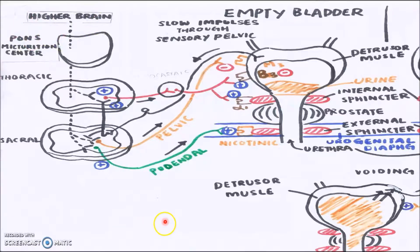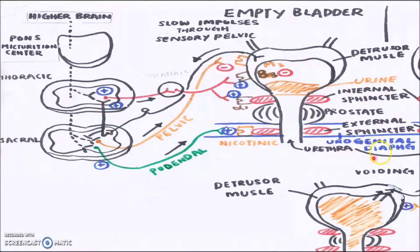As you can see, this is our CNS — central nervous system — with the higher brain and the micturition center. It controls the whole micturition process. In the central nervous system, the thoracic and sacral regions of the spinal cord control this process. That covers all the structures and organs involved in the micturition process, which will be presented in further detail next.